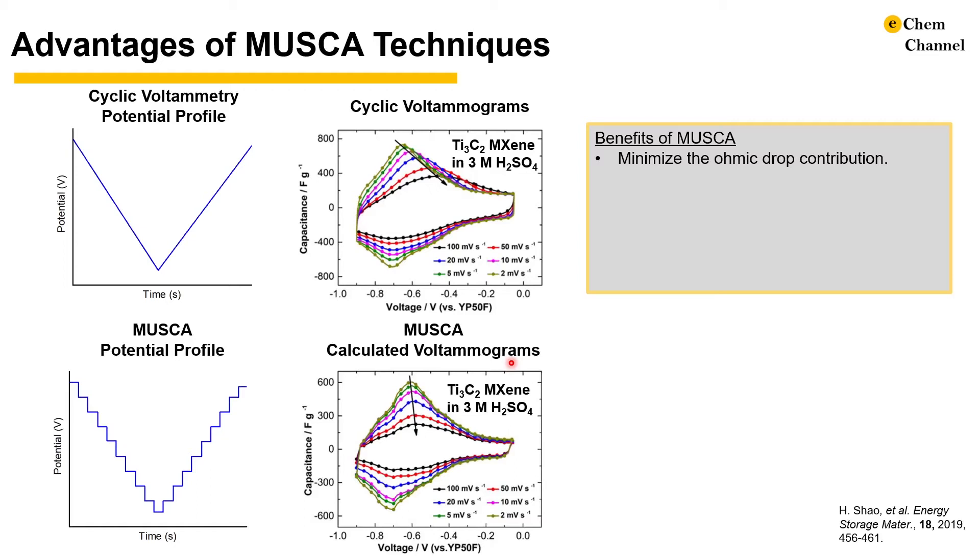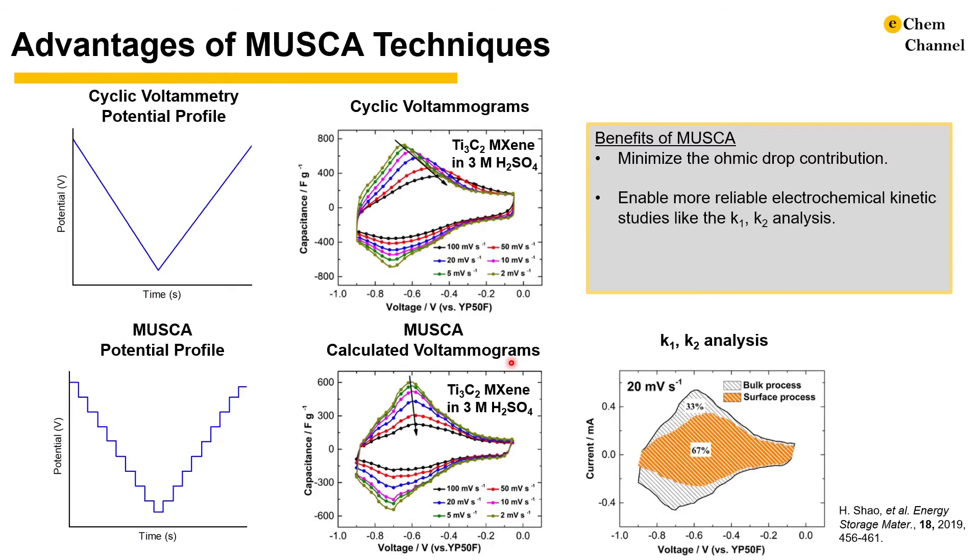In addition to the minimized ohmic contribution, the benefits of MUSCA include more reliable kinetic studies like the K1K2 analysis to distinguish the kinetic contributions from surface-limited or diffusion-limited current. MUSCA is also compatible with many in-situ experiments, as most physical characterization requires a certain data collection period. This data collection period can be matched with the holding time at each potential plateau.